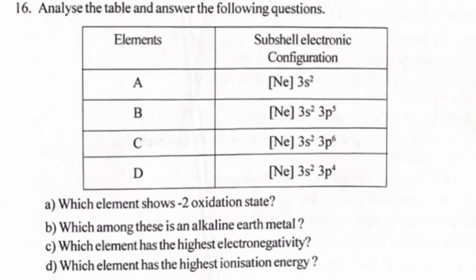a) Which element shows -2 oxidation state? b) Which among these is an alkaline earth metal? c) Which element has the highest electronegativity? d) Which element has the highest ionization energy? Answer: A. D, B. A, C. B, D. C.